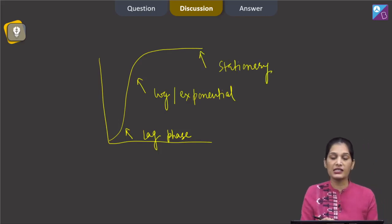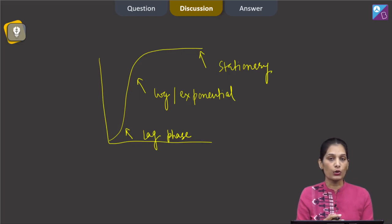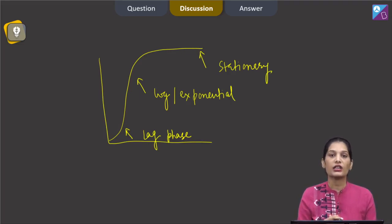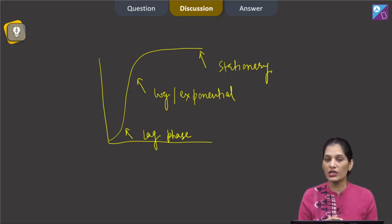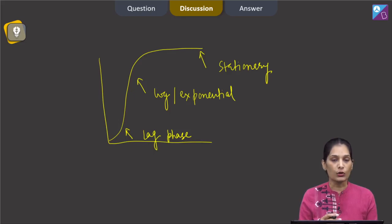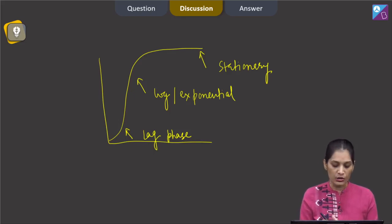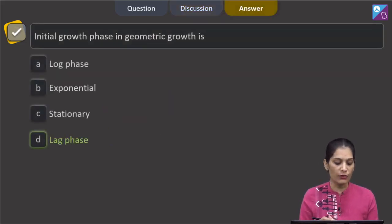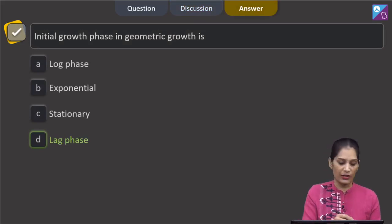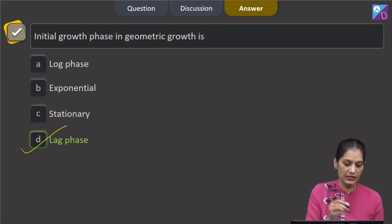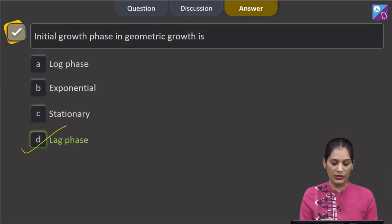In the lag phase, growth is slow. In the log or exponential phase, growth is very high. In the stationary phase, the growth rate slows down and eventually stops. So the correct option for this question is the lag phase.